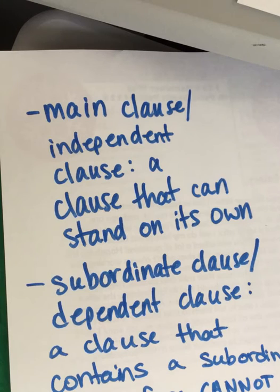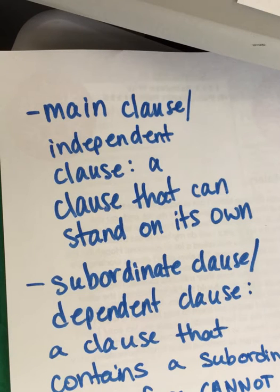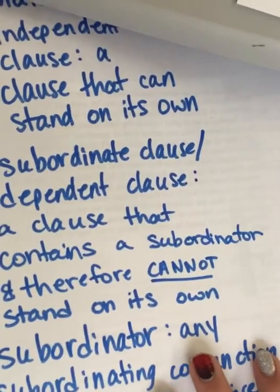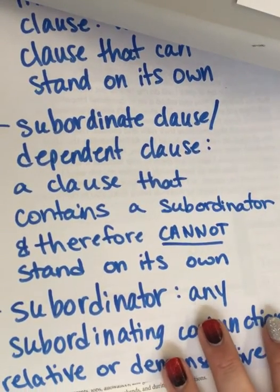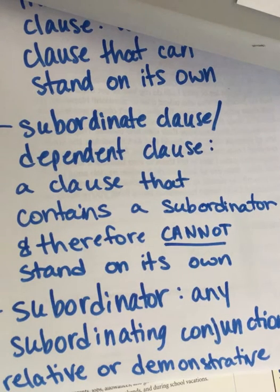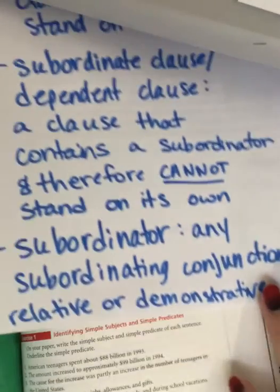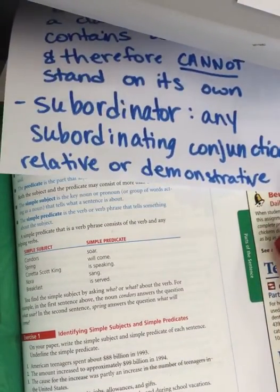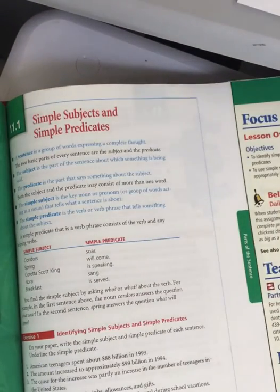On Thursday I had you write down some information at the bottom of your yellow note card — some definitions. We wrote down that a main clause is interchangeable with the word independent clause. Those are clauses that can stand on their own as a sentence. Then the opposite, subordinate or dependent, is a clause that cannot stand on its own because it has a subordinator — any subordinating conjunction, relative or demonstrative pronoun that creates a subordinate clause.